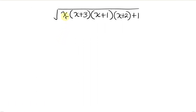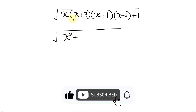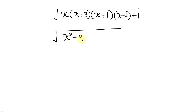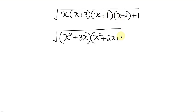Our next step will be for us to expand. So this will be the square root of x times x is x squared, plus x times 3 is 3x, and then times — expanding the second pair — x times x is x squared, plus x times 2 is 2x, plus 1 times x is x, and then plus 1 times 2 is 2.